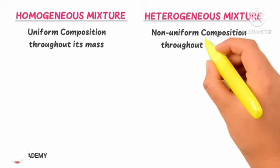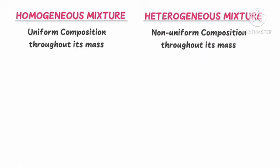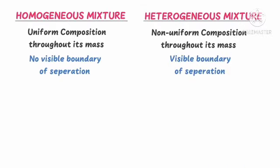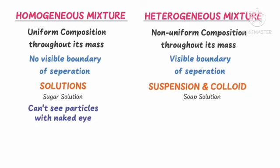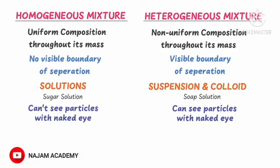Differences between homogeneous and heterogeneous mixtures: Homogeneous has uniform composition throughout its mass; heterogeneous has non-uniform composition throughout its mass. Homogeneous has no visible boundary of separation; heterogeneous has a visible boundary of separation. All homogeneous mixtures are called solutions — example: sugar solution. Suspensions and colloids are examples of heterogeneous mixtures — example: soap solution containing water, oil, and bubbles. In homogeneous mixtures, you cannot see the particles with the naked eye; in heterogeneous mixtures, you can see the particles with the naked eye.